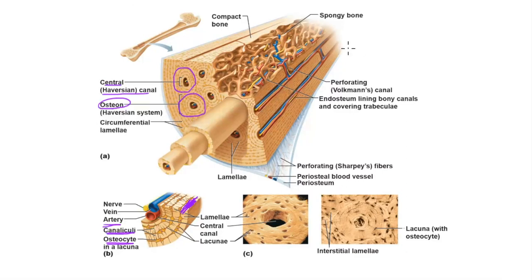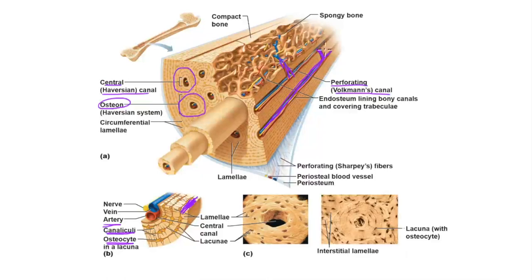Osteons are not isolated from one another — they can communicate by way of perforating or Volkmann's canals. The osteons run parallel to the length of the long bone, and they are connected by perforating canals which run perpendicular to the long axis. This allows arteries to have alternate paths to supply blood in case one gets blocked or damaged.